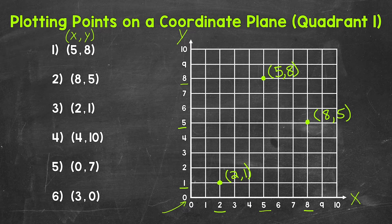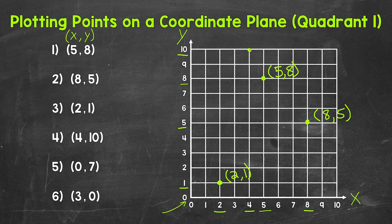Next, let's move on to number 4, where we have 4, 10. 4 is the x-coordinate, so over 4. And then 10 is the y-coordinate, so up 10. We plot this point right here, so 4, 10.